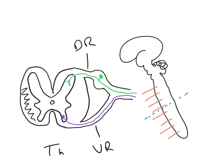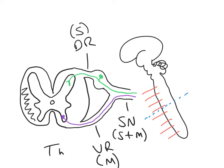Now that we've drawn these two axons, we can emphasise an important fact. The dorsal root is purely sensory - so if you have an injury to the dorsal root, you will get isolated sensory symptoms. The ventral root is purely motor - so if you affect the ventral root by an injury, then you will get purely motor symptoms. However, the spinal nerve formed by the coalescence of the dorsal and ventral roots is mixed. It is both sensory and motor, so if you damage a spinal nerve, you will experience both motor and sensory symptoms.